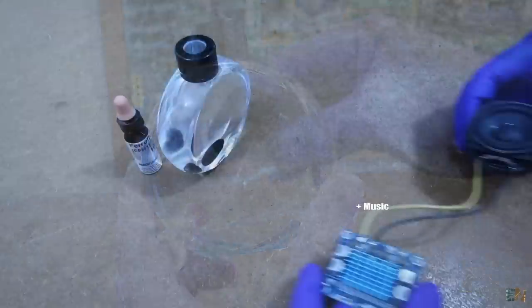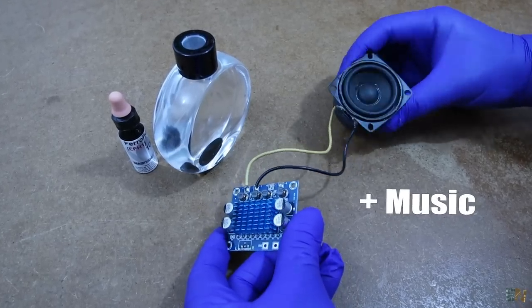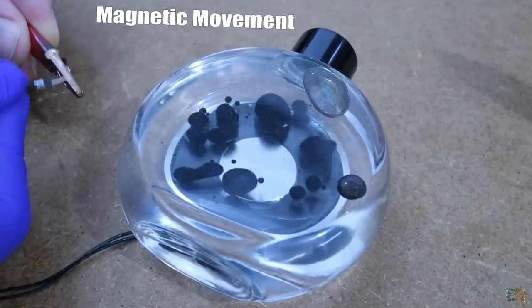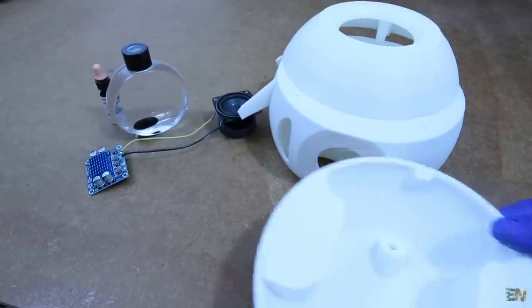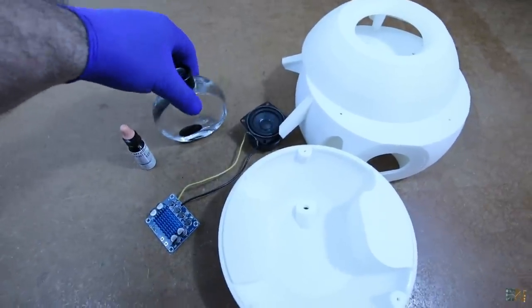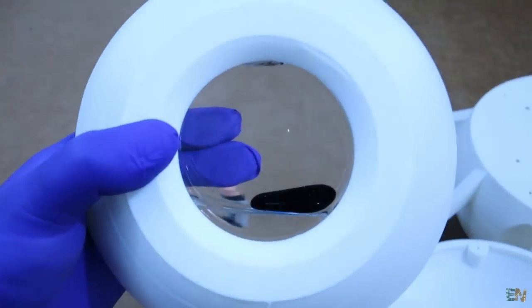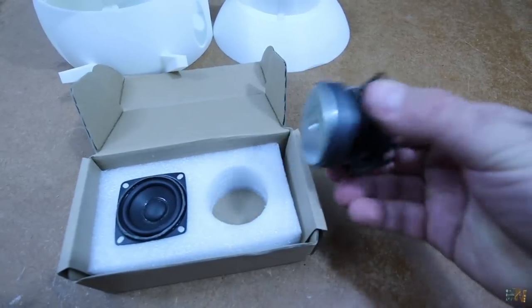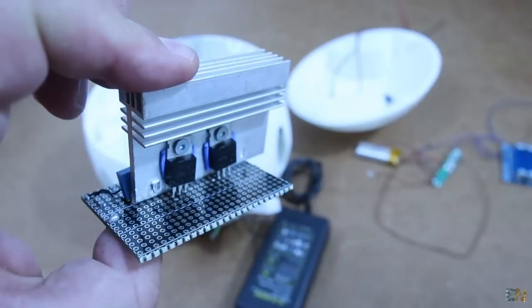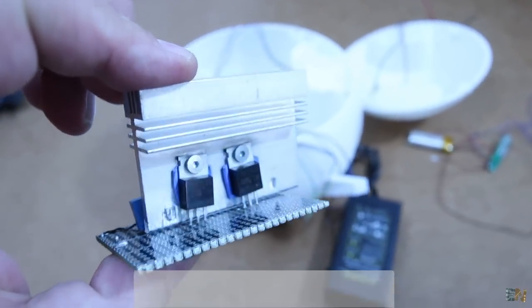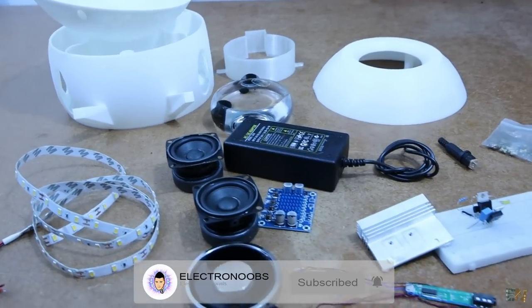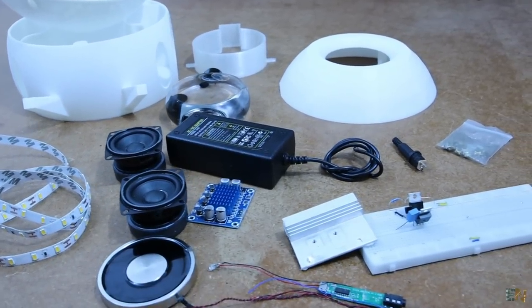For today's project I want to combine the ferrofluid movement with music. I've seen such a speaker online and I want to make one as well, so we'll have a Bluetooth 3D printed speaker with ferrofluid effects and futuristic look. I will design and print the enclosure for the speaker, then select some good speakers and add a Bluetooth music receiver. We add a power supply and create a simple circuit that will use that music to create magnetic movement and make the ferrofluid dance. That should look awesome. Let's get started.